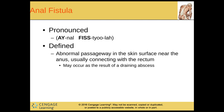We have an anal fistula. This is an abnormal passageway in the skin surface near the anus, usually connecting with the rectum. This may occur as a result of a draining abscess.